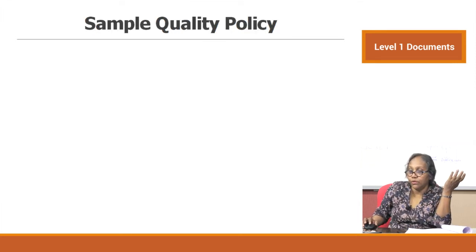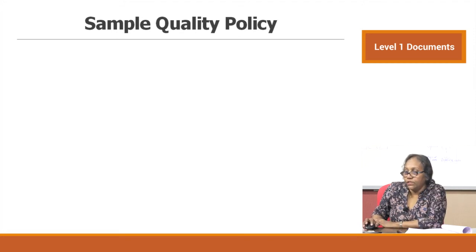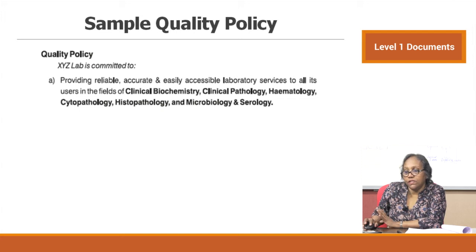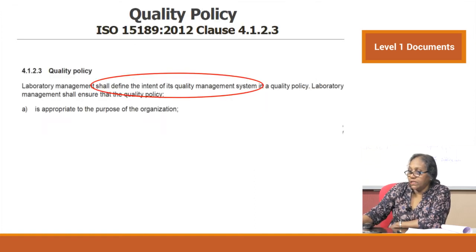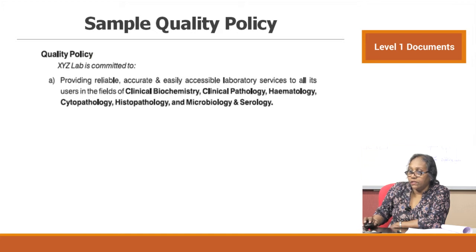Let us look at a sample quality policy. The five conditions need to be stated by top management. This sample states: XYZ lab is committed to providing reliable, accurate, easily accessible laboratory services to all users in the field of biochemistry, pathology, and whatever comes under the scope of the QMS. This addresses the first condition — appropriate for the function and purpose of the organization.